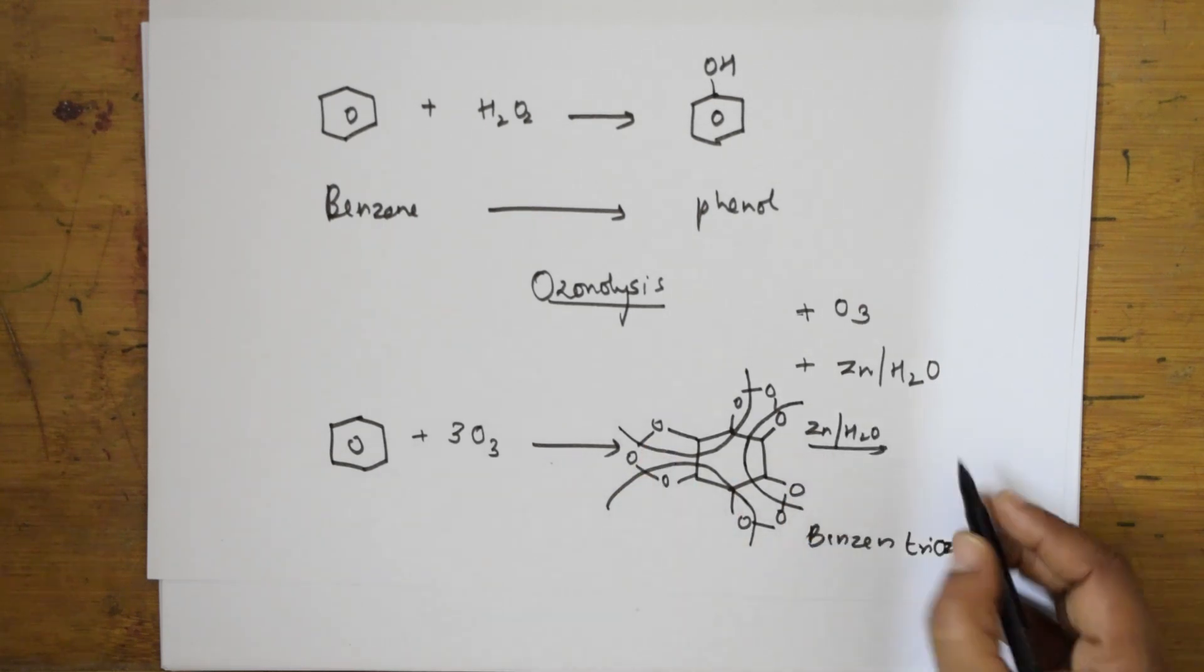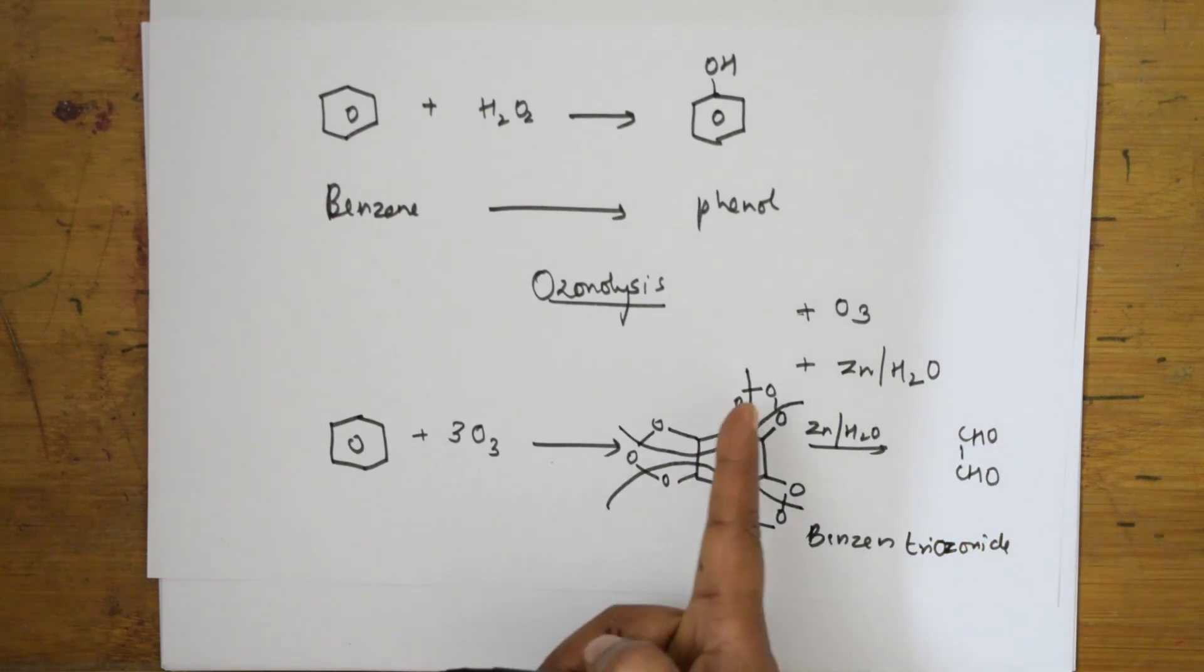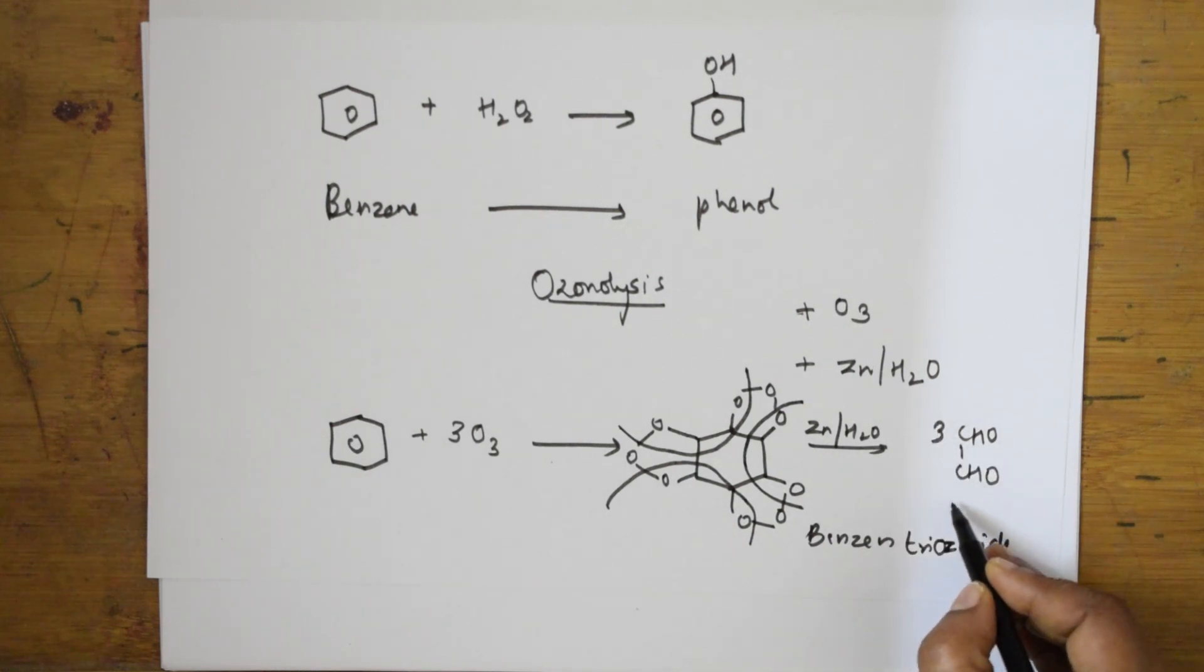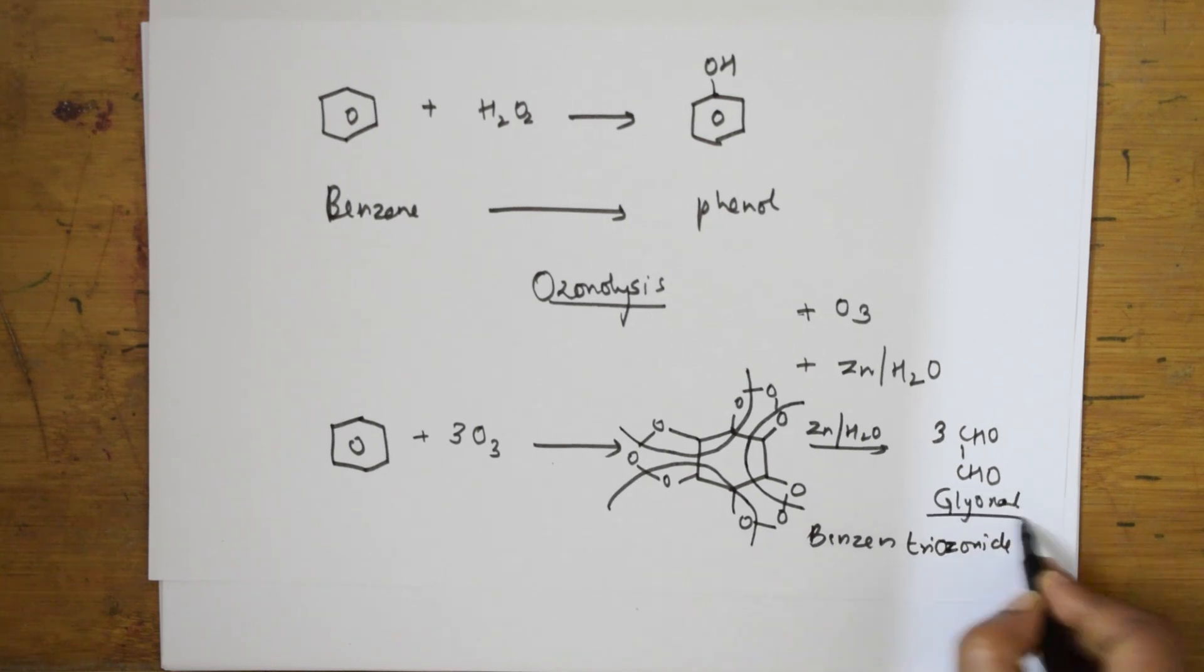Finally what are we going to do? I said we are going to introduce zinc in the presence of water. So it breaks up and forms a compound as CHO-CHO. How many? One, two, three. Three moles of this. What is this compound? This is called glyoxal.